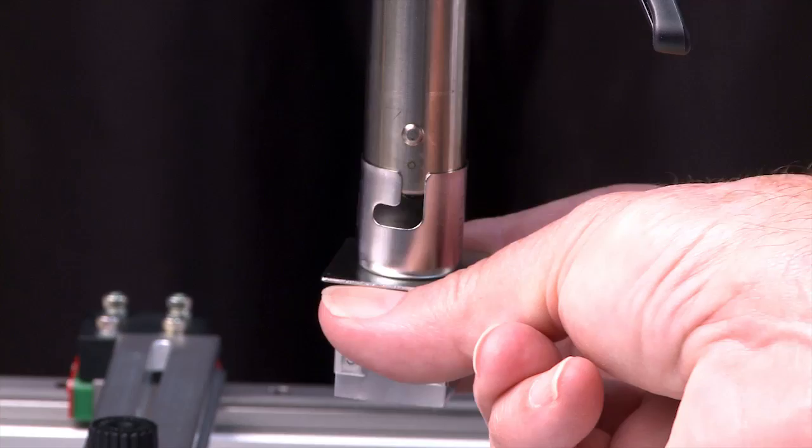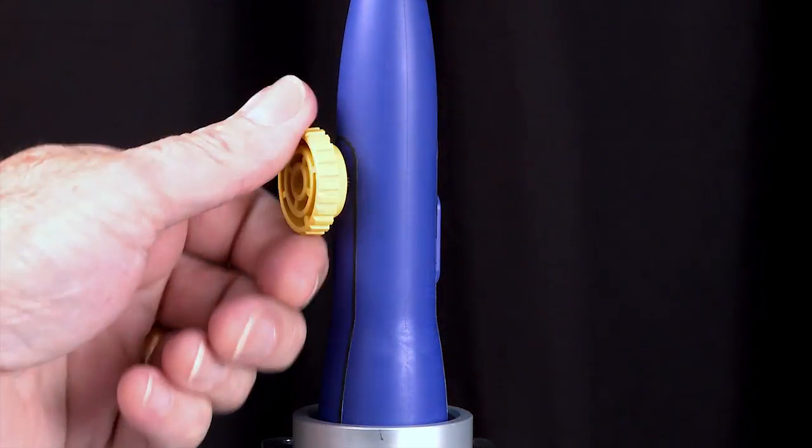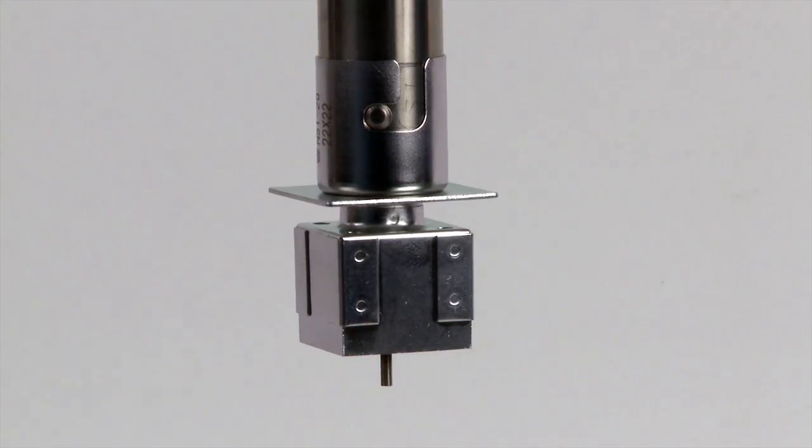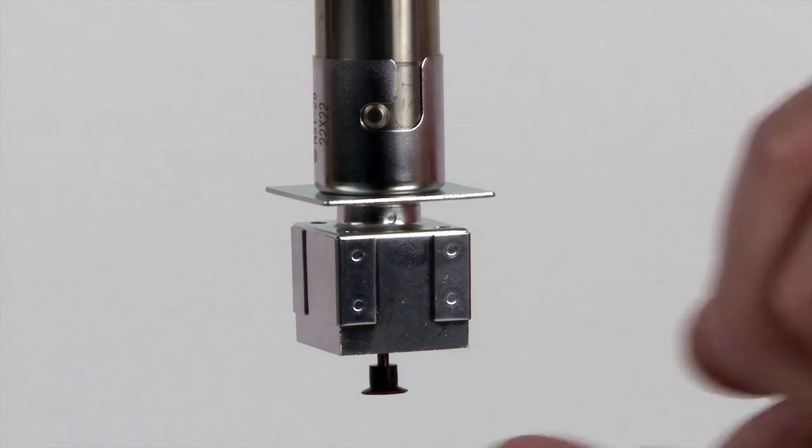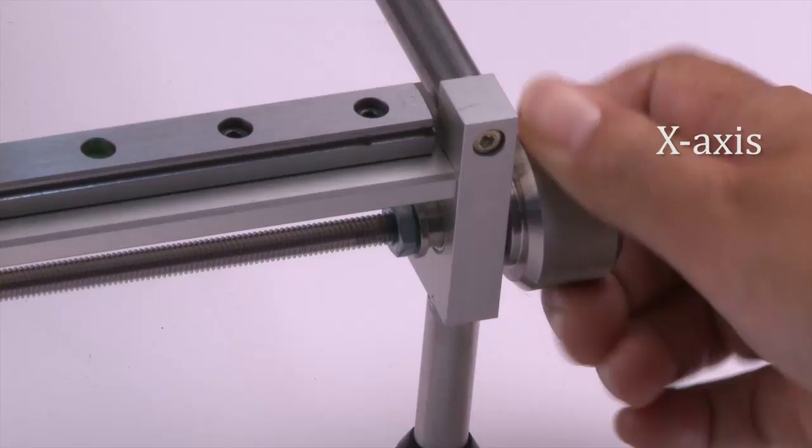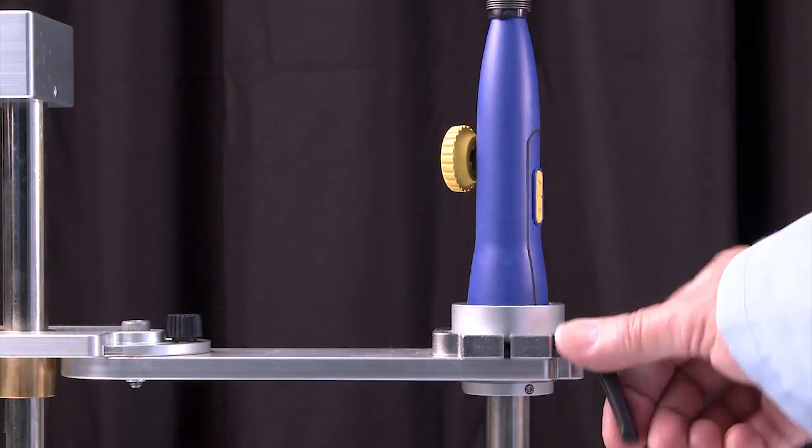Attach a nozzle to the handpiece heater pipe, and then with the handpiece vacuum pickup control knob, lower the vacuum pickup tube until it extends out of the nozzle. Attach a vacuum pickup cup to the vacuum pickup tube and retract the vacuum pickup tube.